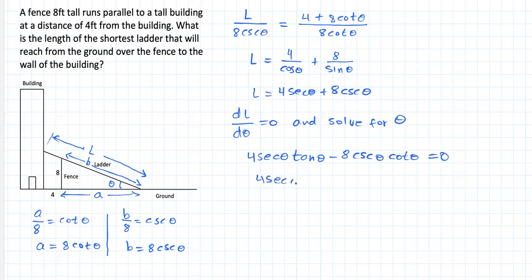This leads to the following: 4 secant of theta tangent of theta equals 8 cosecant of theta cotangent of theta. And simplifying again, using the quotient identities, reciprocal identities that we know from trigonometry, you're going to end up with tangent cubed of theta equals 2. Meaning tangent of theta equals cube root of 2, theta equals arc tangent of cube root of 2. But what is that? Well, that is theta equals 51.56 degrees, right? A serious candidate to minimize the length of this ladder.